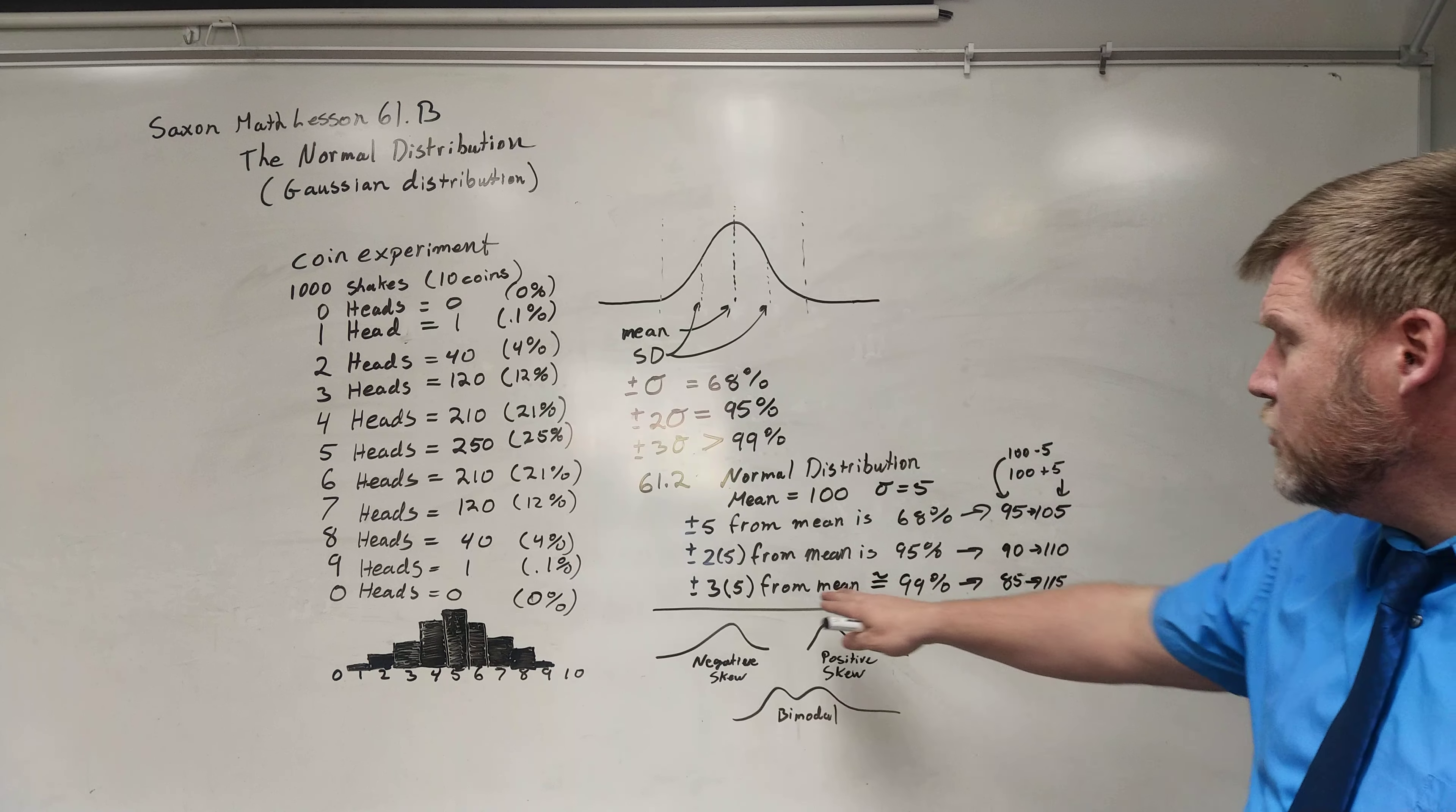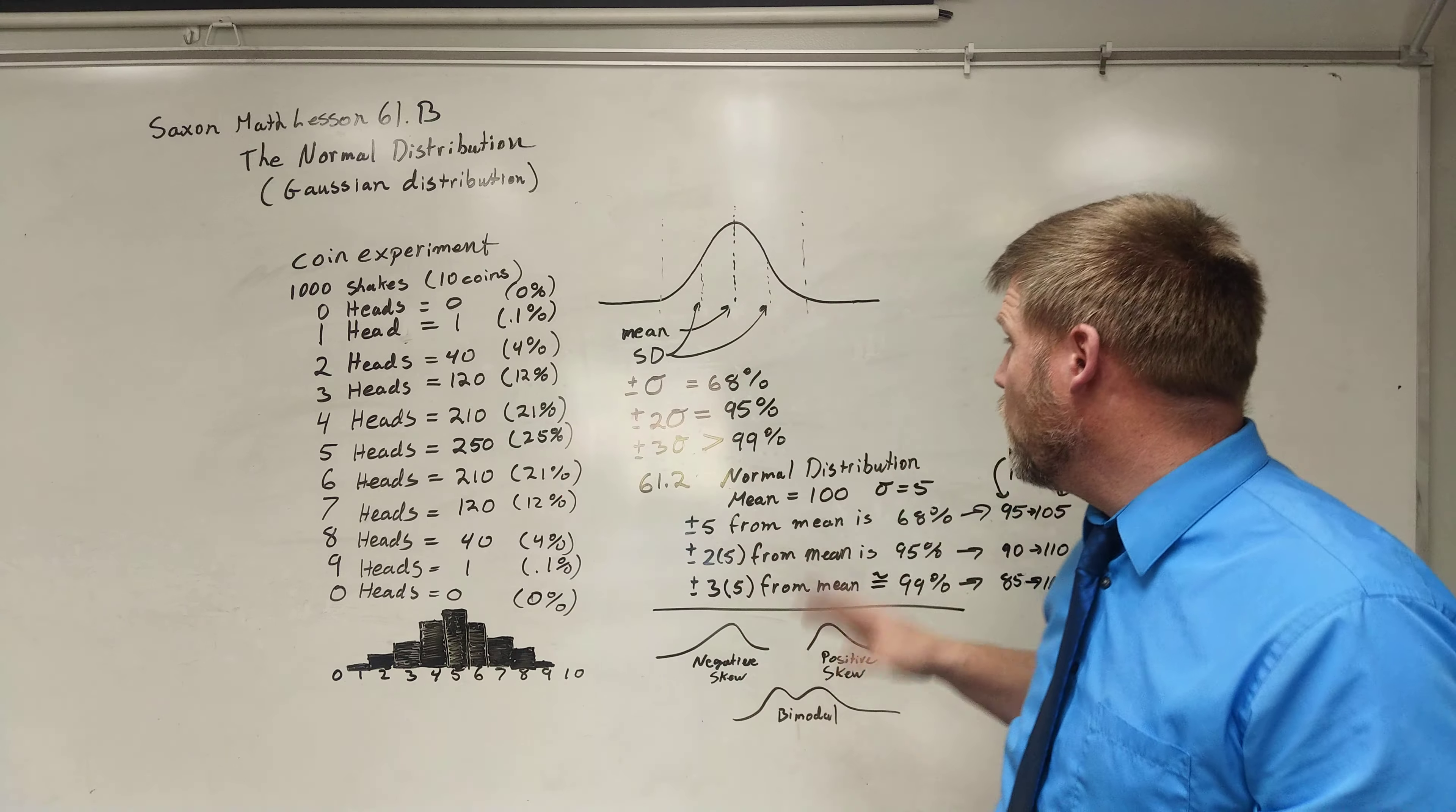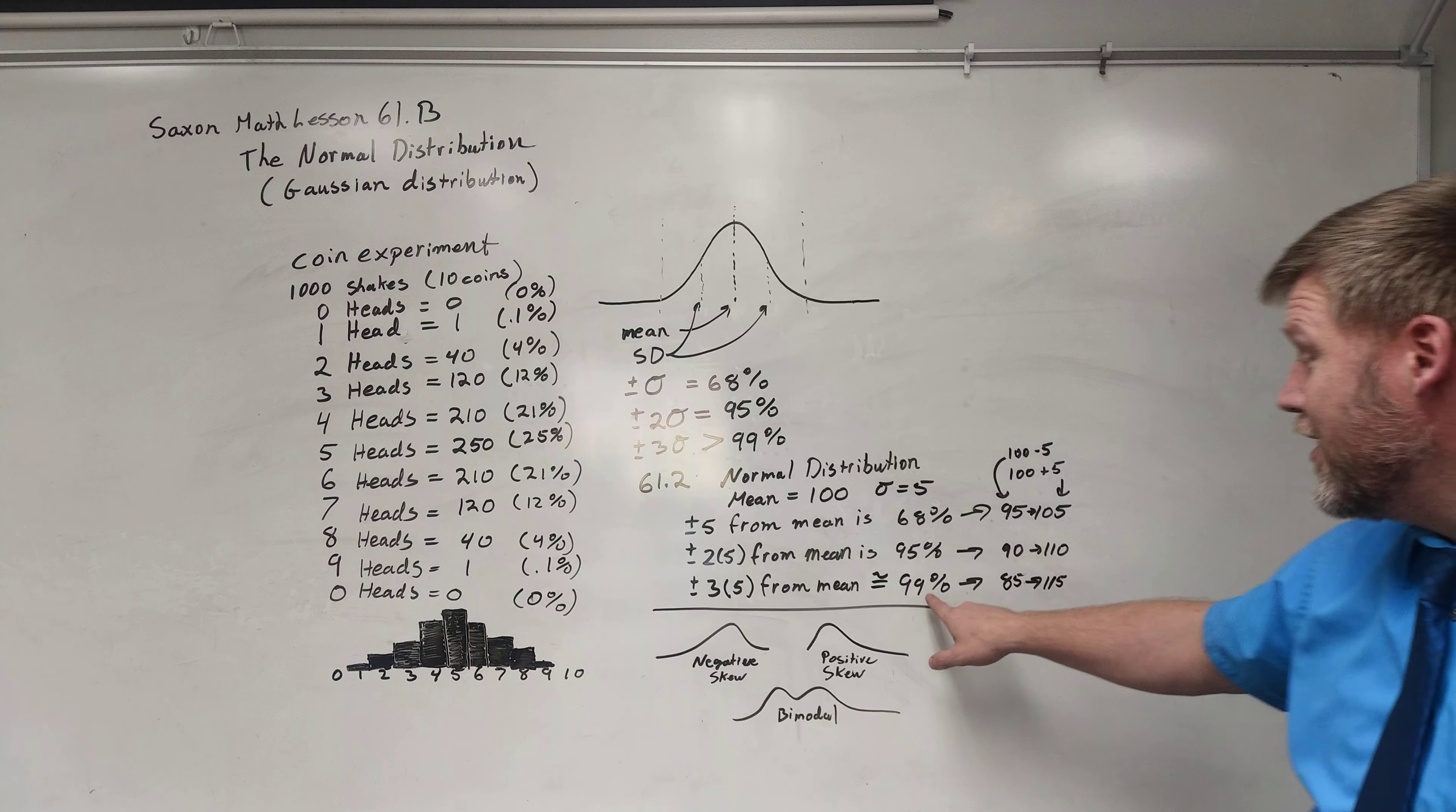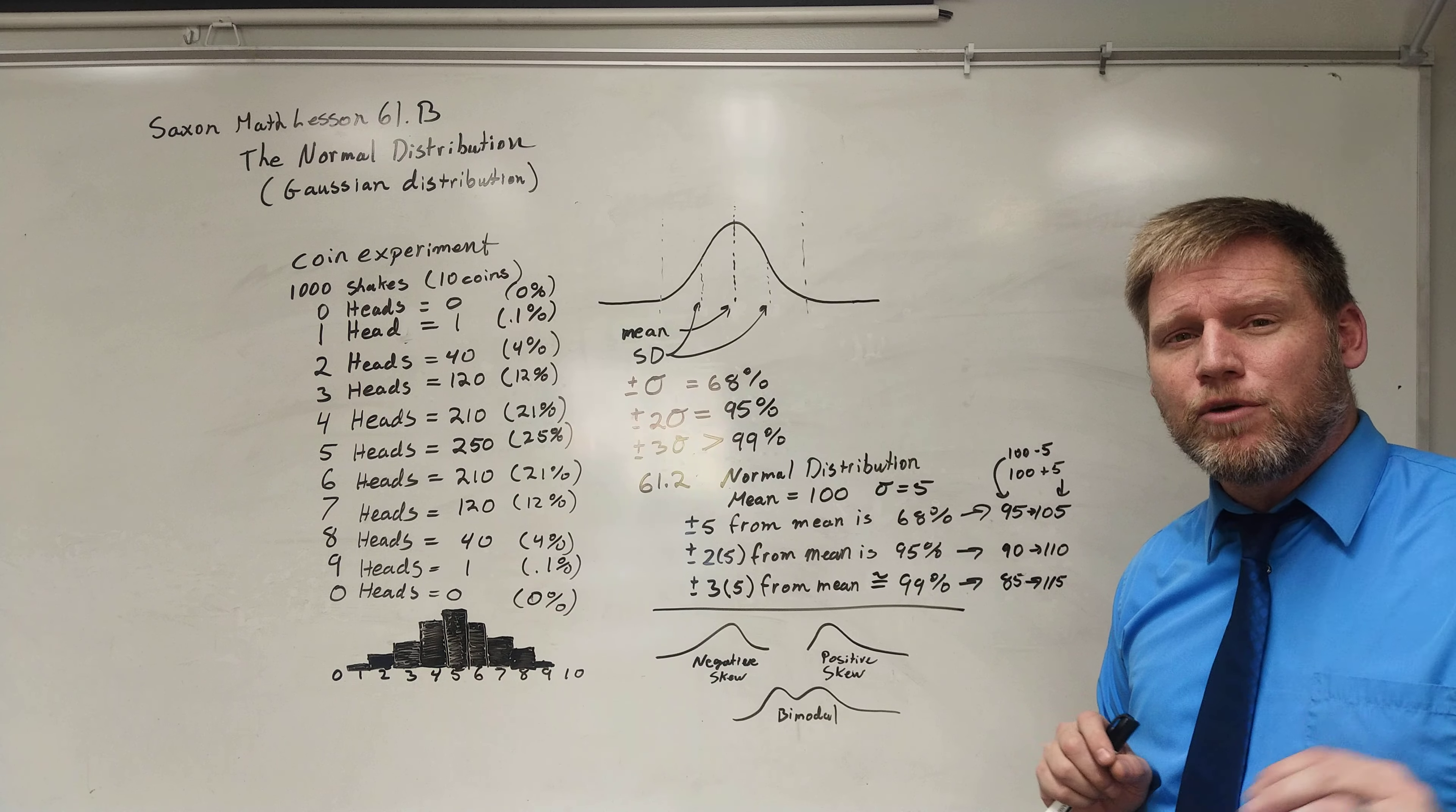The last one we're going to find is between three, right? And we're going to say three times our standard deviation, which is 15. Add that to our mean, so 115. 100 minus 15, so 85. So 85 to 115 will have over 99% or approximately 99% of the data will lie within those numbers. And that's as long as you have a normal distribution.